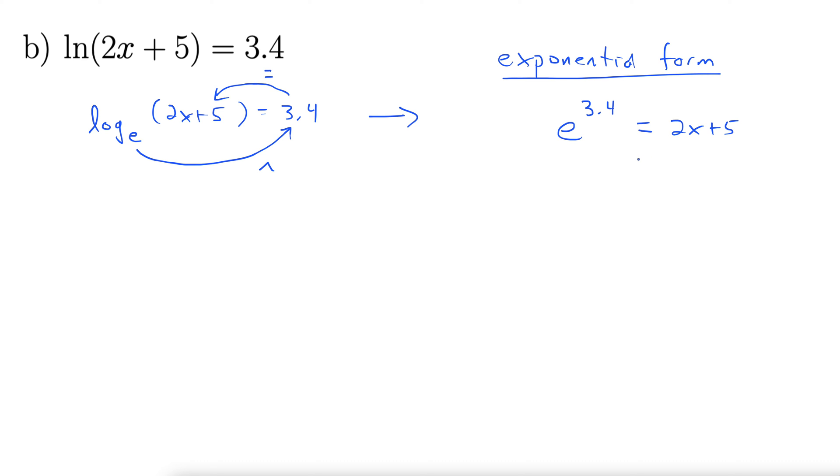And then you just solve this thing for x. e to the 3.4 is nothing special. That's just some number. e is some number, raised to the 3.4 is just some other number. Treat this entire expression the same way as you would treat something like 5. Just leave it like a number.